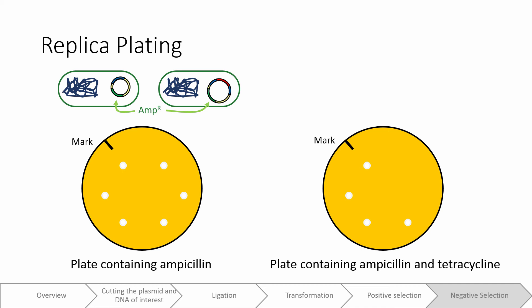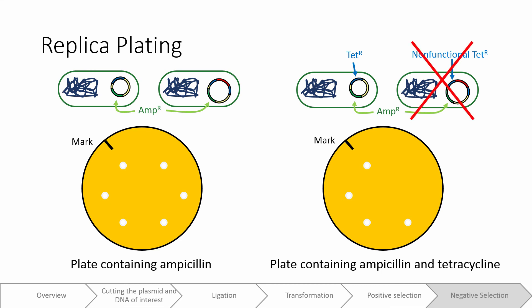The second plate, however, contains both ampicillin and tetracycline. Why would we use tetracycline in addition to ampicillin? Recall that if our gene of interest was successfully inserted into our plasmid, then we would have inactivated the tetracycline resistance gene. This would mean that the colonies that contain our DNA of interest will die on this plate. This is an example of negative selection, where the cells that contain our DNA of interest die.